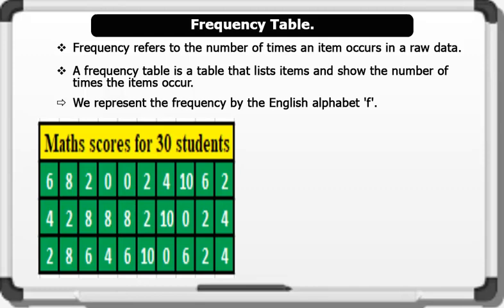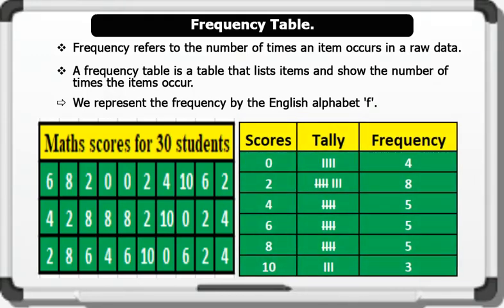Below is the score of 30 students in a mathematics test. The record of data above can be prepared in a frequency table using a tally. This is a frequency table representing the above data.